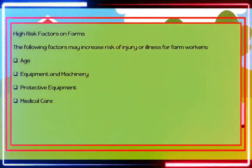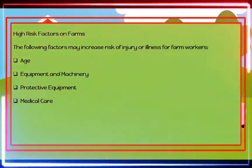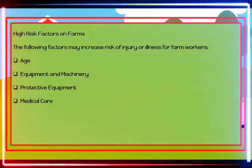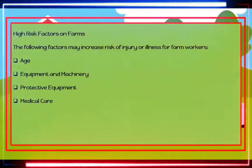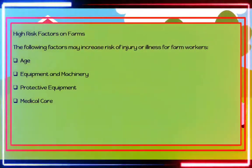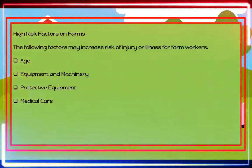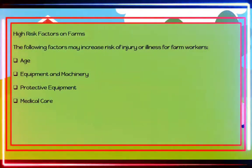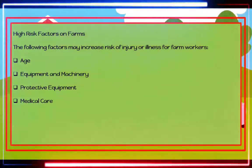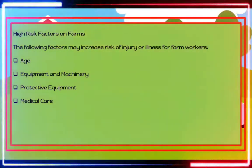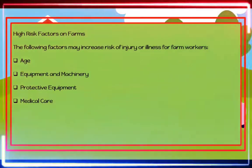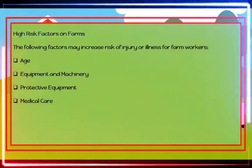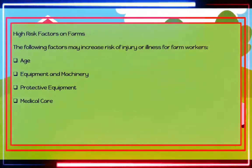Protective equipment: Using protective equipment such as seat belts on tractors, and personal protective equipment such as safety gloves, coveralls, boots, hats, aprons, goggles, and face shields could significantly reduce farming injuries. Medical care: hospitals and emergency medical care are typically not readily accessible in rural areas near farms.